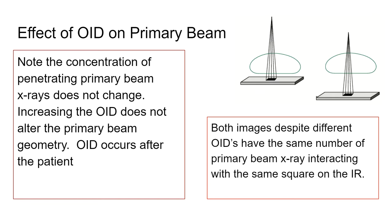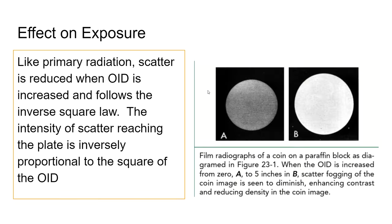In terms of the primary beam, the primary beam hasn't changed. We're still getting the same amount of penetration or not penetration. Despite the fact that they have sort of different OIDs, we're still pretty much getting the same result. The numbers might be a little bit different - you're bringing the object closer, so over here you would expect more photons to die. But generally speaking, the major concentration of penetrating primary beam doesn't change. It's still going to come out the back.